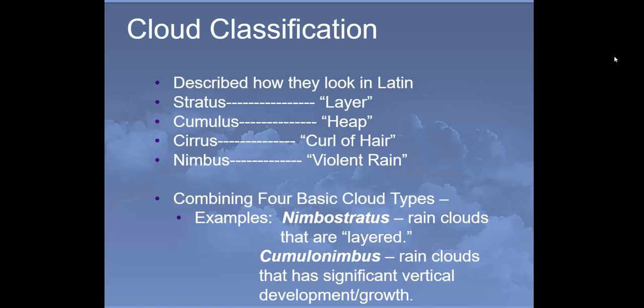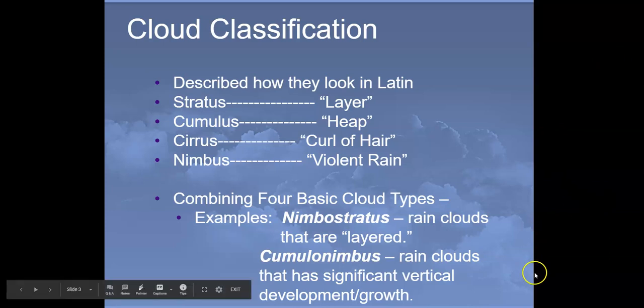The word 'stratus' describes something that comes in a layer. 'Cumulus' means heap. 'Cirrus' clouds look like curls of hair, and 'nimbus' means violent rain. When we combine the four basic cloud types — for example, nimbostratus means rain clouds that are layered, and cumulonimbus is a rain cloud with significant vertical development or growth.